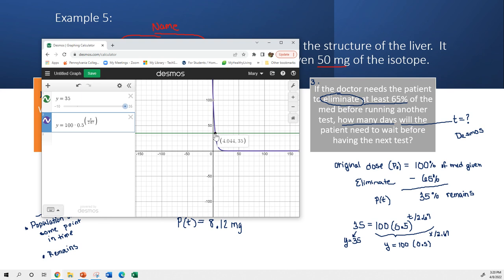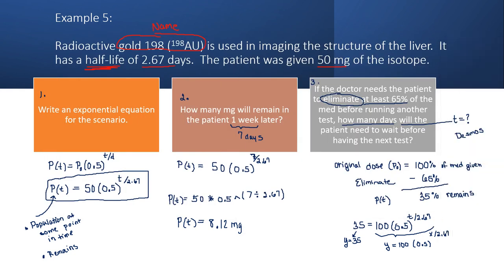And so how many days? They have to wait four days before they have their next test. So the ordered pair that I got was 4.044, and that got us to 35% remained. This is my x. So my time here, my x is 4 days.